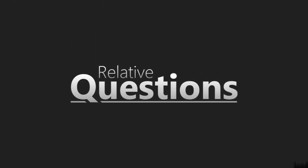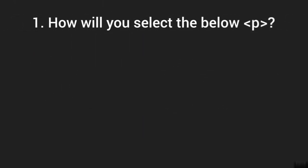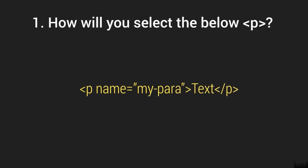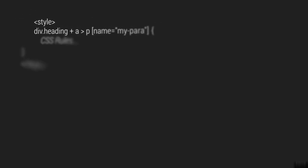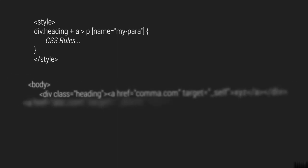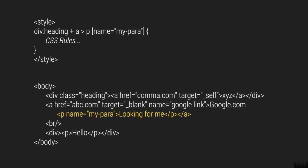A practical scenario: how will you select the paragraph with the attribute selector which has the name attribute defined and is the direct child of the anchor tag which is adjacent to the div tag? The styling code to select this paragraph uses the div plus anchor child selector greater than p with name attribute selector as per the given conditions.